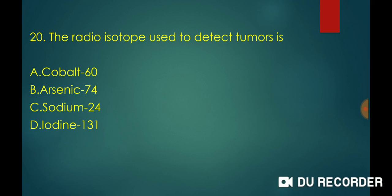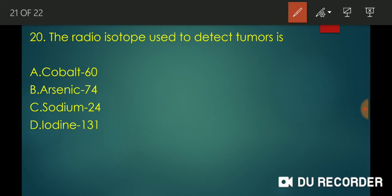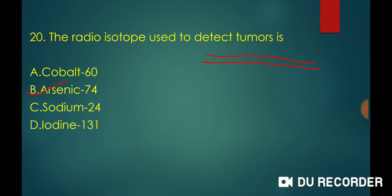Which radioactive isotope is used for detection of tumors? Arsenic-74 is the radioactive isotope used for detecting tumors.